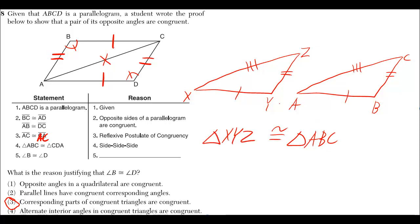With the pairs of sides shown being congruent, in other words, XY being equal to AB, BC being equal to YZ. The ones that have the double marks go together, the ones that have the triple marks go together.